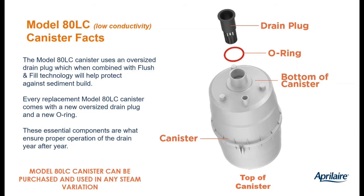We offer two canisters: the model 8080, our standard canister that works with most water in the continental United States, and the 80LC — LC for low conductivity — used in parts of the country where you have naturally soft water, not mechanically softened water, but naturally soft water such as reservoir water fed by mountain snowpack. You don't have to buy a special steam humidifier; the canisters are just swappable. The LC canister has larger electrodes that are closer together to compensate for that lower conductivity.